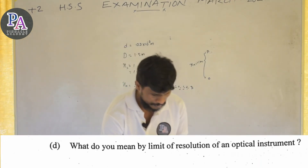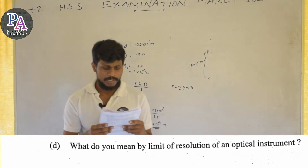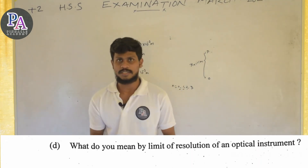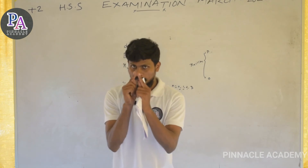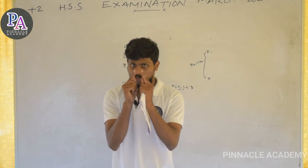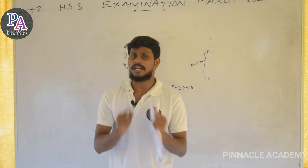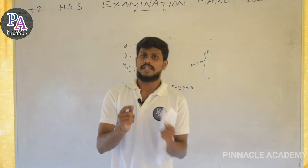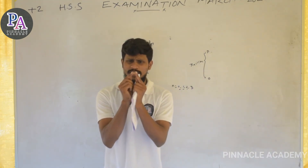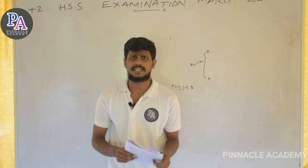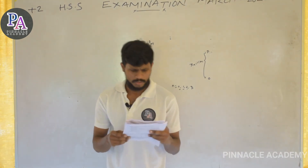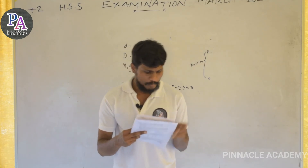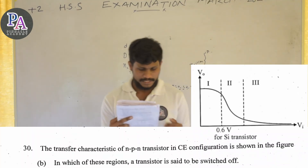What do you mean by the limit of resolution of an optical instrument? The limit of resolution is the minimum distance at which an optical instrument can distinguish two separate points. It is a limiting distance below which two objects cannot be resolved.